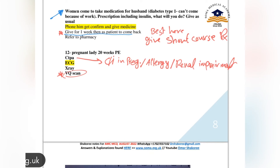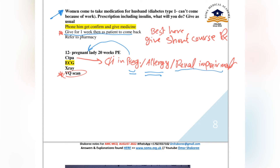For a pregnant lady at 20 weeks presenting with pulmonary embolism, CTPA is generally used to detect PE, but CTPA is contraindicated in pregnant ladies, in people allergic to contrast dye, and in renal impairment. So in a pregnant lady, do a VQ scan.